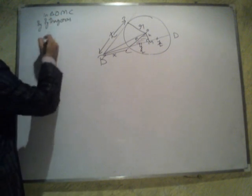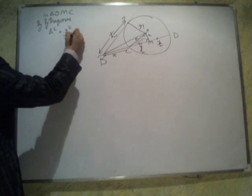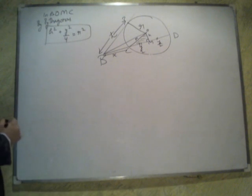By Pythagoras, you get H square plus Y square upon 4 is equal to R square. Use it, let it be like this.